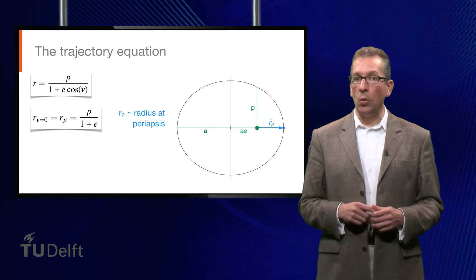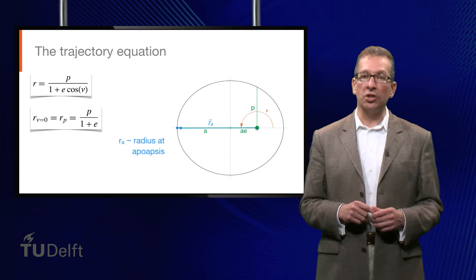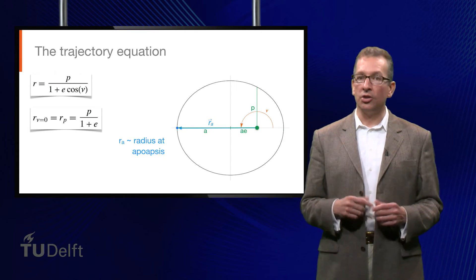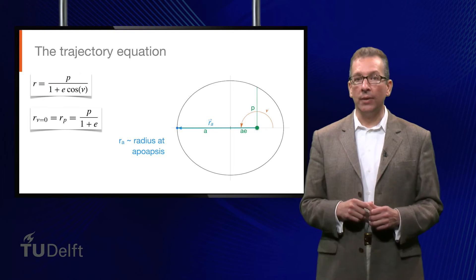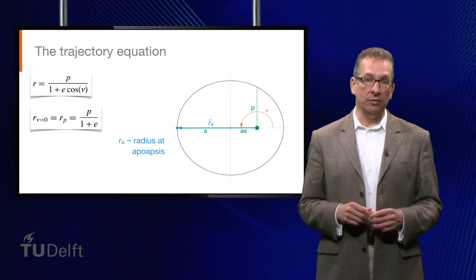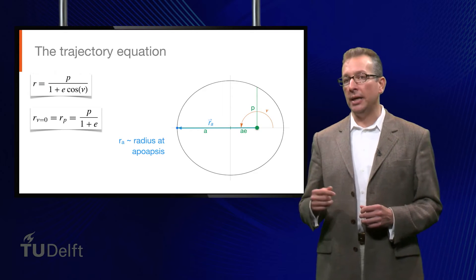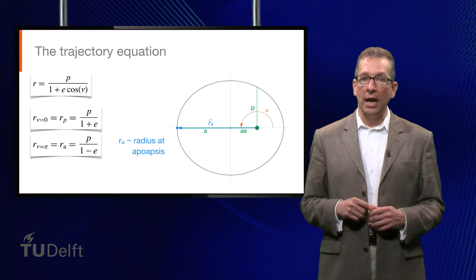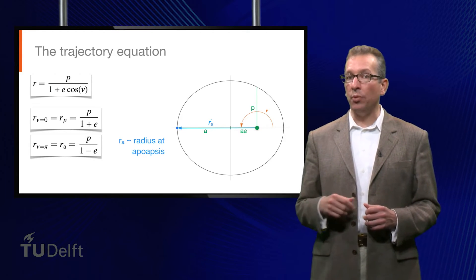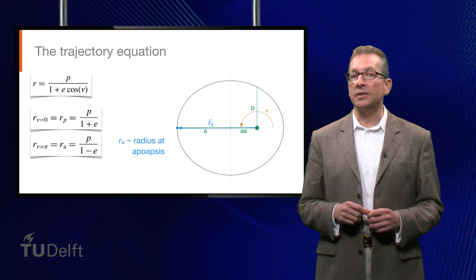Similarly, we can look at the point where m2 is furthest from m1, which is called the apoapsis. Just as before, we could call this point apogee or aphelion for the Earth or the Sun, respectively. At this point, the true anomaly is equal to pi. We substitute pi for nu in the trajectory equation and see that the radius at apoapsis, rA, is equal to p over 1 minus e.